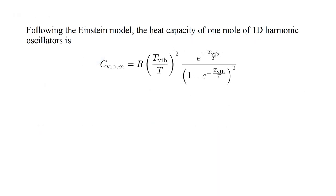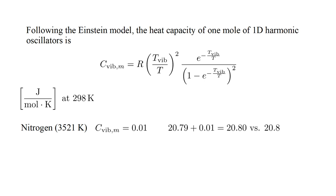Now we use the Einstein model's expression for the heat capacity of one mole of harmonic oscillators. Evaluating this contribution at room temperature, for nitrogen we find 0.01 Joules per mole Kelvin. Adding this to the rigid body value 20.79, we get 20.80, which matches the observed value of 20.8.